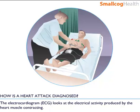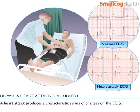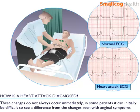The electrocardiogram looks at the electrical activity produced by the heart muscle contracting. A heart attack produces a characteristic series of changes on the ECG. These changes do not always occur immediately, and in some patients it can initially be difficult to see a difference from the changes seen with anginal symptoms.